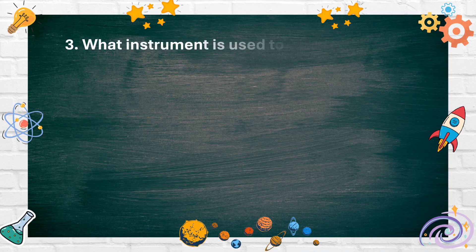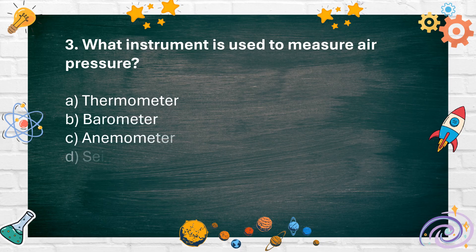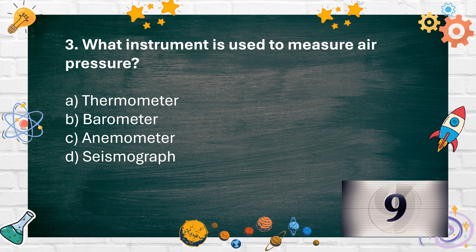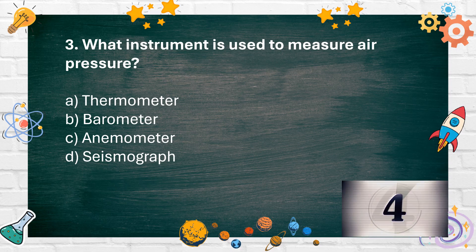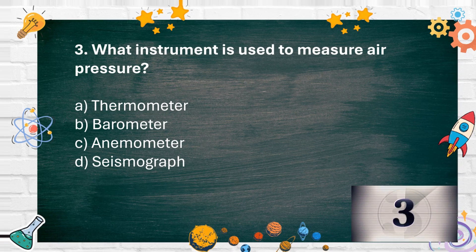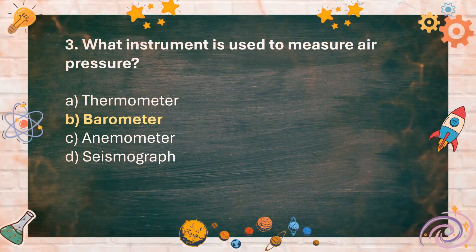Number 3. What instrument is used to measure air pressure? A. Thermometer, B. Barometer, C. Anemometer, D. Seismograph. The answer is B. Barometer.